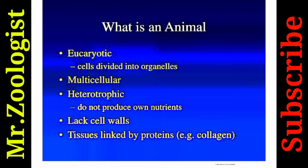Animals are multicellular and heterotrophic — they cannot prepare their own food from simpler inorganic substances and do not produce their own nutrients. Animals lack cell walls; their tissues are linked by proteins. Animals have cell membranes mostly, though a few have cell walls. Tissues are linked by the protein collagen, present in muscular tissues.